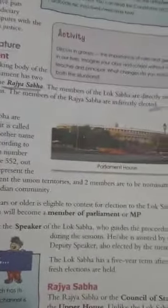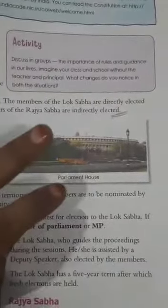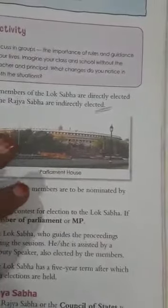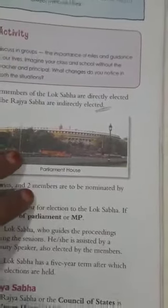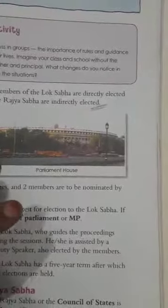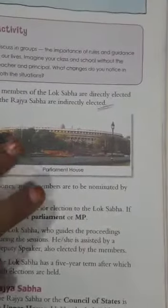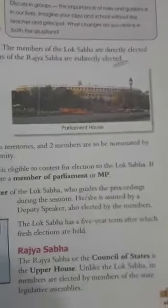Regarding the legislature, the Parliament is the law-making body of the central government. Parliament has two houses: the Lok Sabha and the Rajya Sabha. Members of the Lok Sabha are directly elected by the people through elections, while members of the Rajya Sabha are indirectly elected.